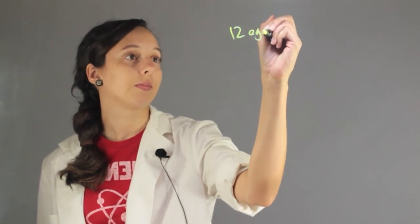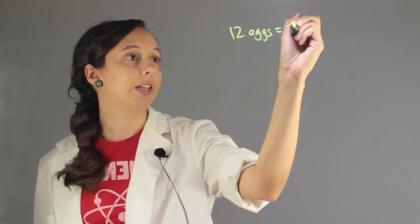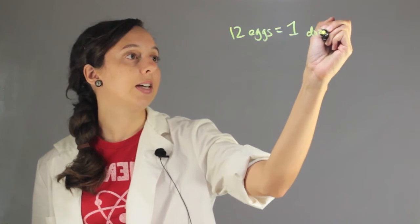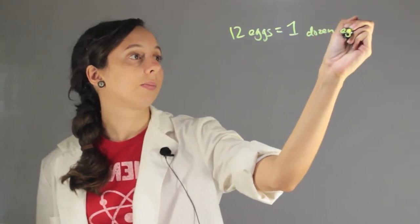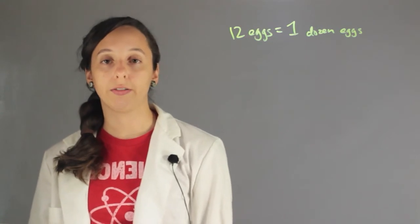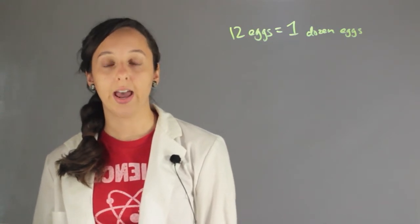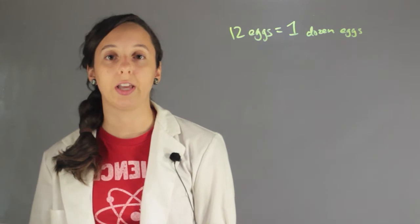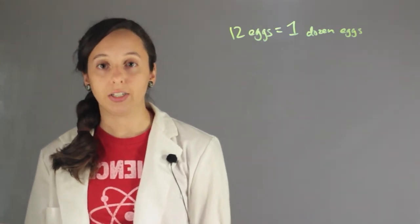And a really good analogy for the mole is the dozen. So if I say that I have 12 eggs, that's the same as saying I have one dozen eggs. And this is helpful because sometimes you have too many eggs and you don't want to say I have 36 eggs. You can just say I have three dozen and so it just makes it easier.